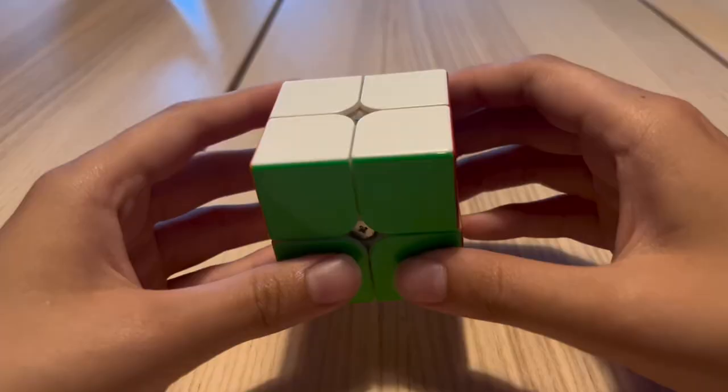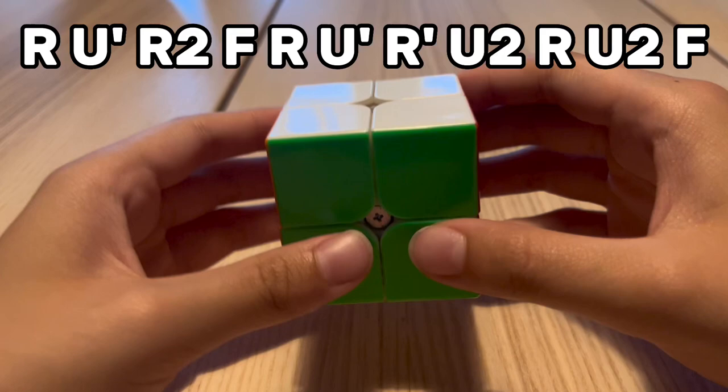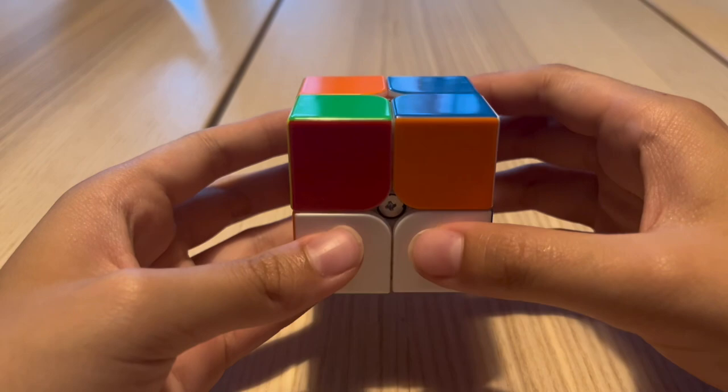For his fourth solve, Zayn got a 1.04. So he stuck with the same orientation, he did a U, L, and this just goes straight into a TCL, plus one case.